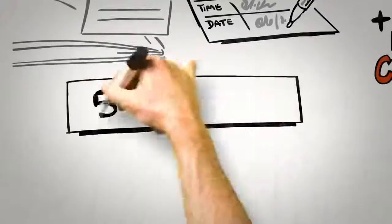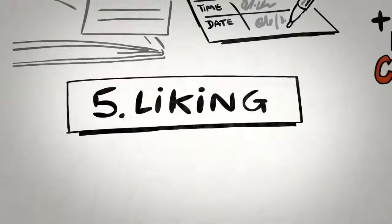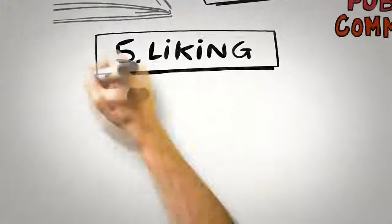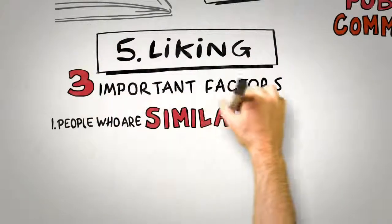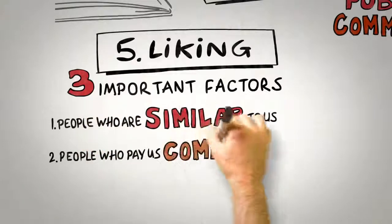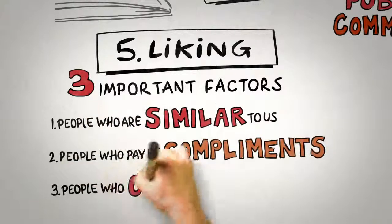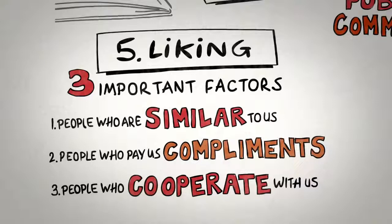The fifth principle is the principle of liking. People prefer to say yes to those that they like. But what causes one person to like another? Persuasion science tells us that there are three important factors. We like people who are similar to us, we like people who pay us compliments, and we like people who cooperate with us towards mutual goals.